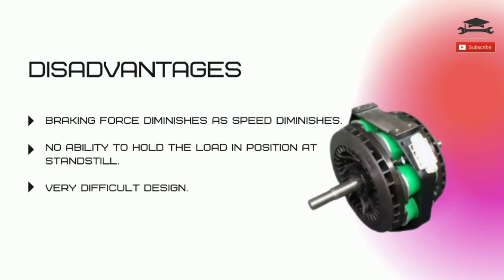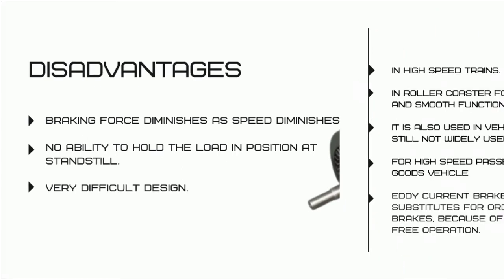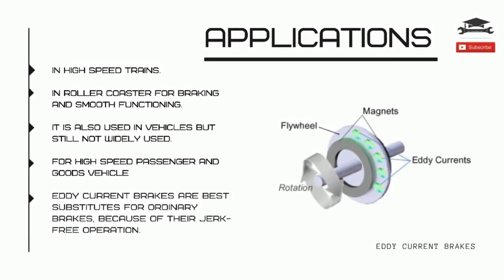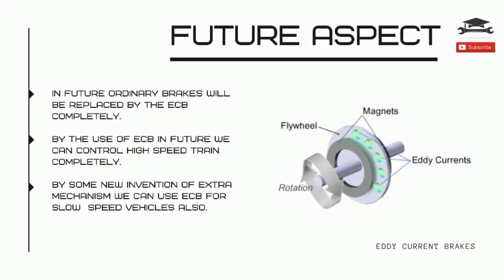Looking into the disadvantages, we can see that braking force diminishes with diminishing speed, it has no ability to hold the load in position at standstill, and is a very difficult design. ECB has found various applications such as in high-speed trains and in roller coasters. It's also used in vehicles but not widely used; they are best substitutes for ordinary brakes due to their jerk-free operation. The future aspect of ECB remains in design innovation to apply them in slow speed vehicles also, and thereby completely replacing ordinary brakes.